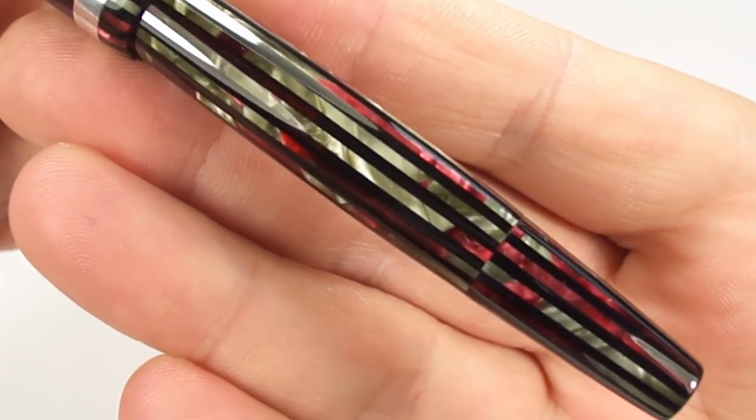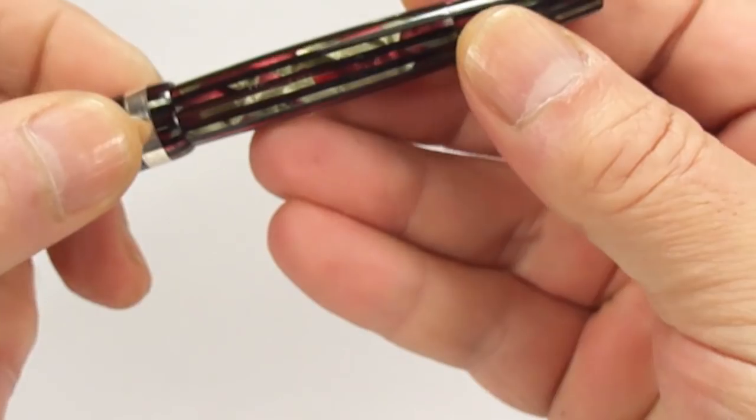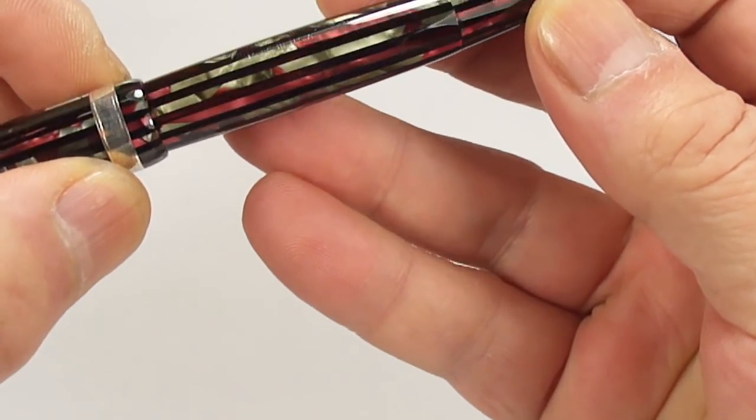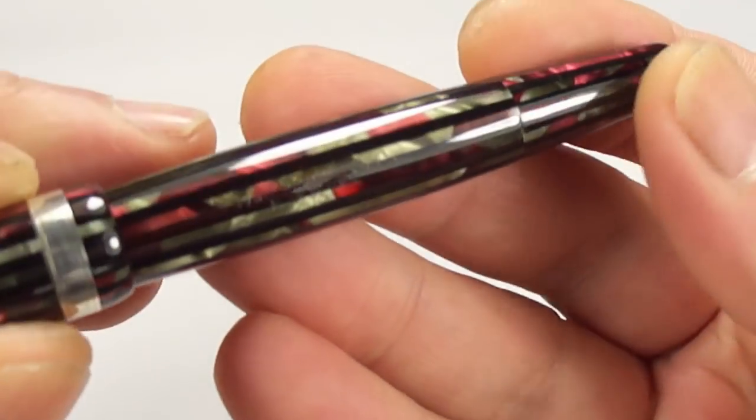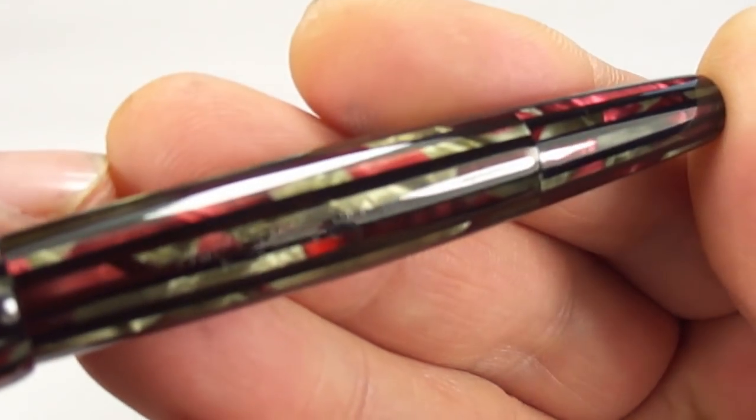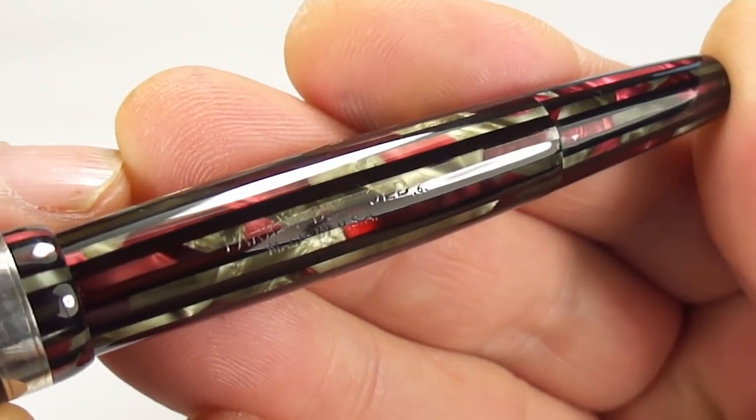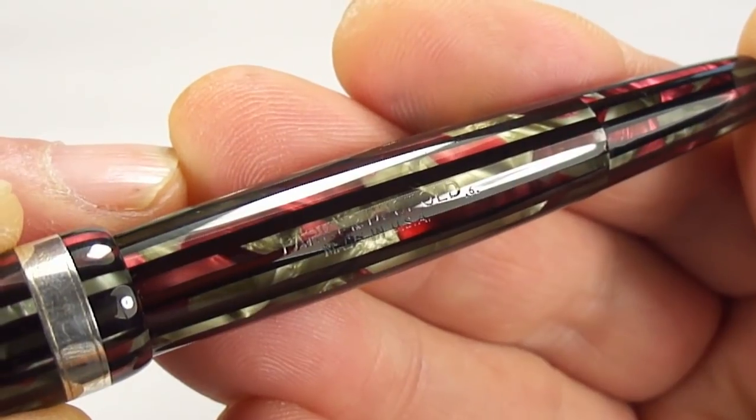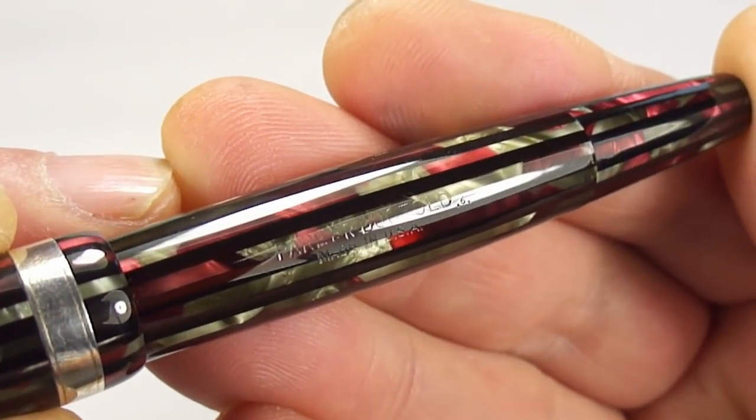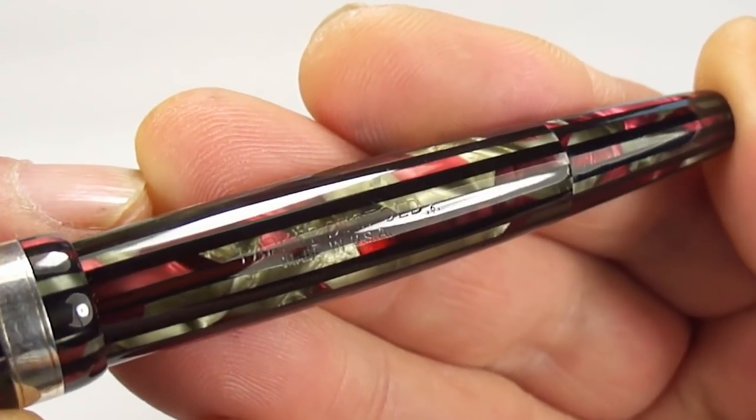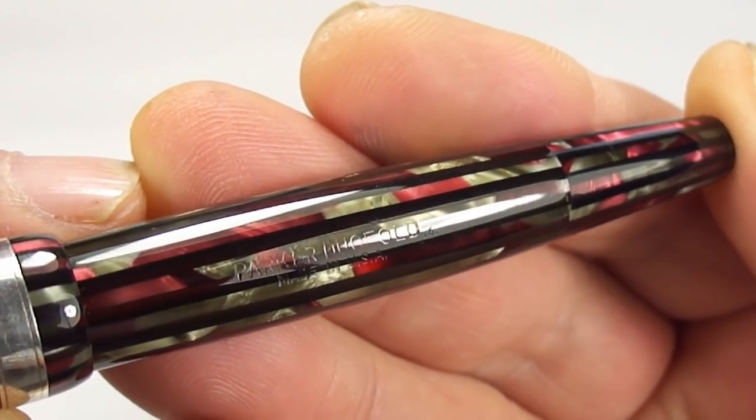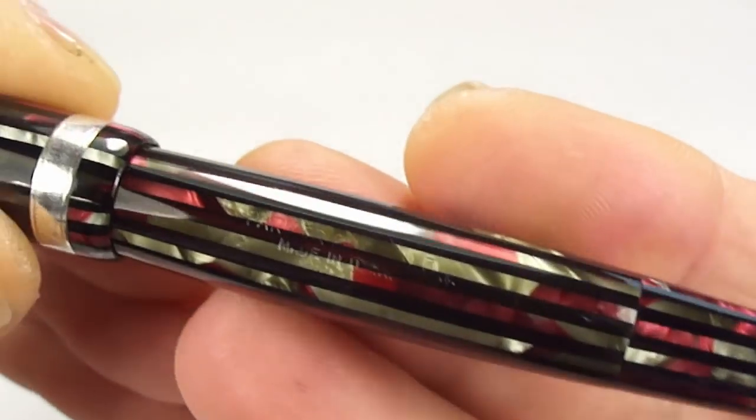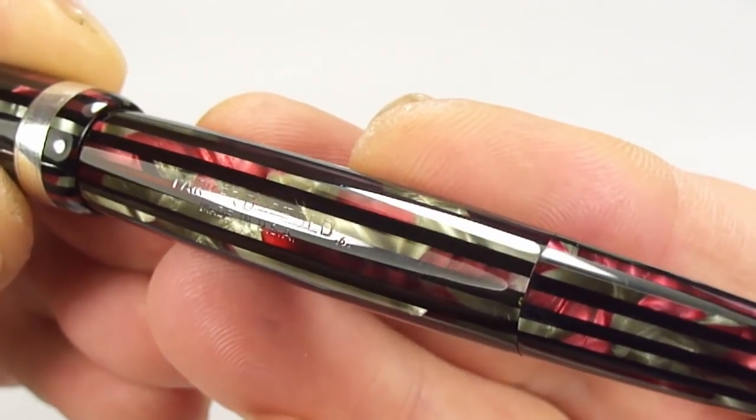Let's show you the barrel imprint. If I can just see it over the barrel, which is a little bit difficult. I think there it is. Let's keep it nice and still and I'm hoping you can see that. The barrel imprint reads Parker Duofold, made in USA, and then hopefully you can see to the end it has a number 6.